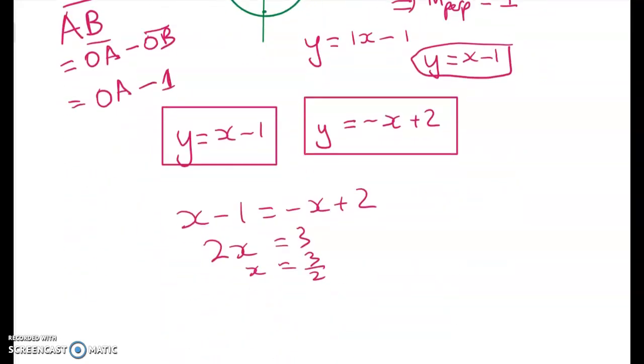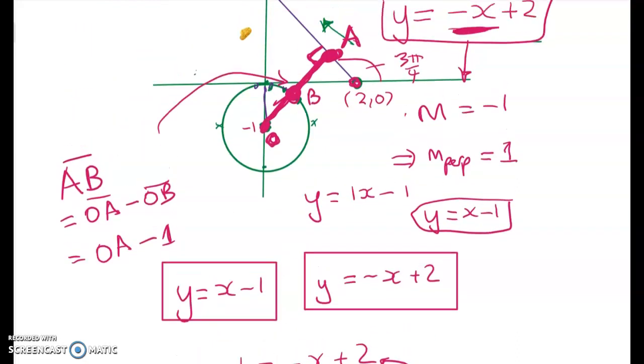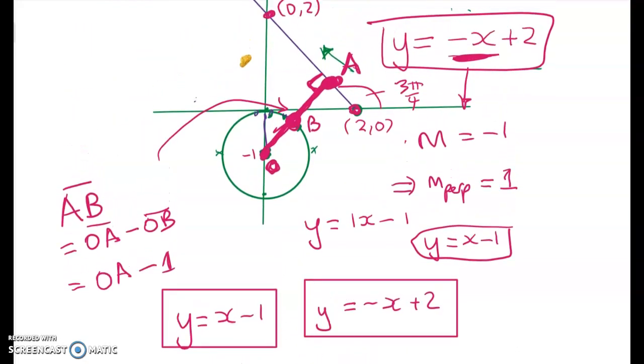Right, so x = 3/2 and it's on this line, or we could do either one. So what's the y value? Well it's -3/2 + 2 which is 1/2. So now we're nearly there. We've got the coordinates for point A.